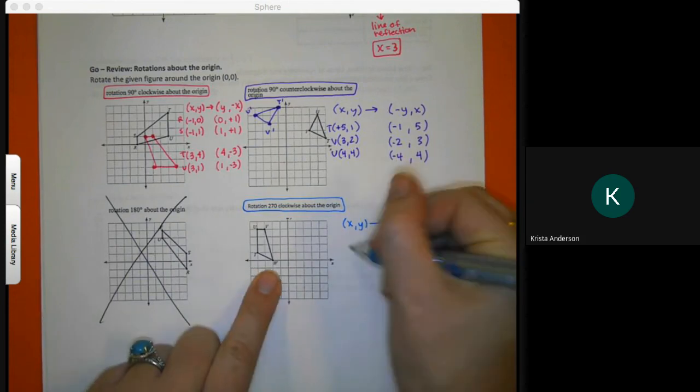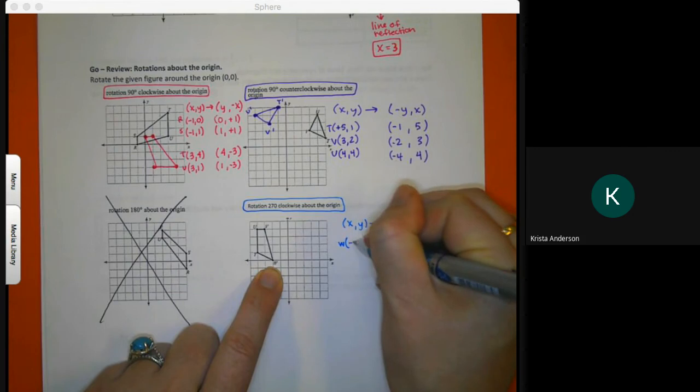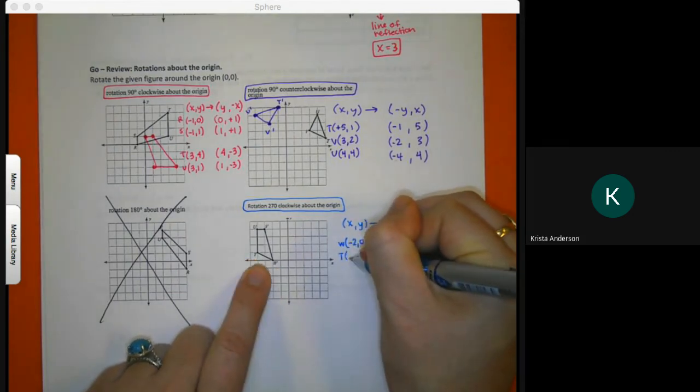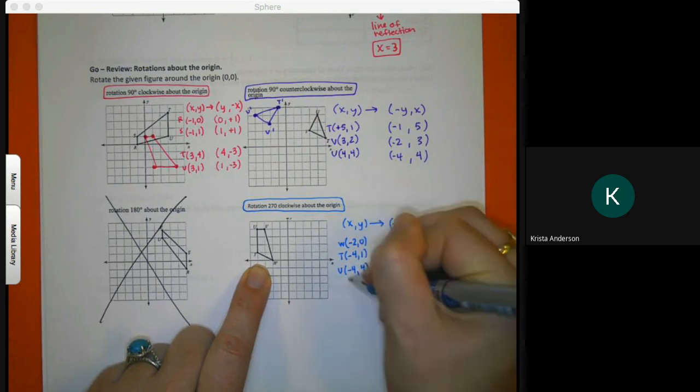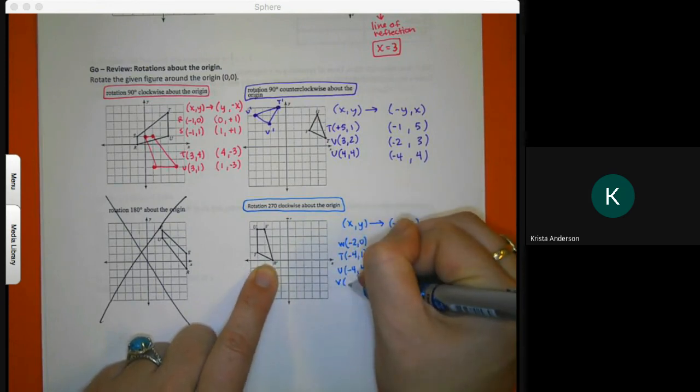My points - we'll start with W, negative two zero. T is at negative four up one. U is at negative four up four. V is at negative three up four.